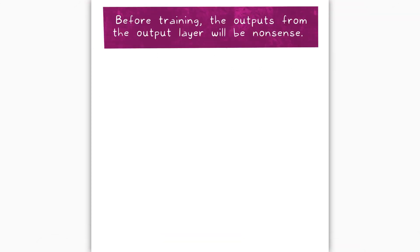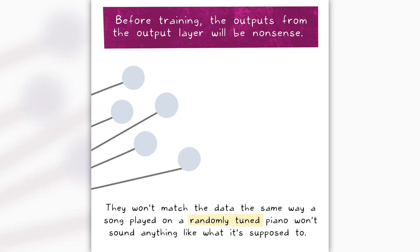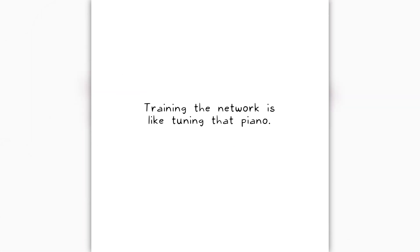Before training, the outputs from the output layer will be nonsense. They won't match the data, the same way a song played on a randomly tuned piano won't sound anything like what it's supposed to. Training the network is like tuning that piano.